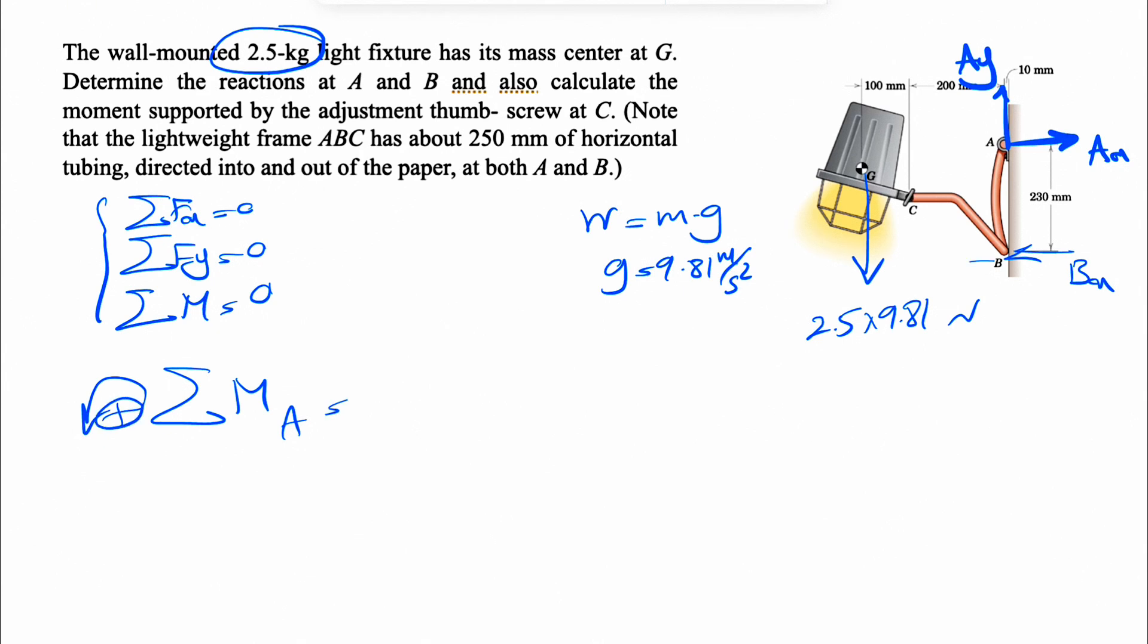That way we get rid of AX and AY. So we're going to have the moment of BX, which is a clockwise moment about point A. So negative BX times the position vector would be the vertical distance from A to the line of action of BX, which is 230. We don't need to do the unit conversion for millimeter because it will be cancelled out anyway. And we're going to have the moment of the weight, which is counterclockwise. So positive 2.5 times 9.81.